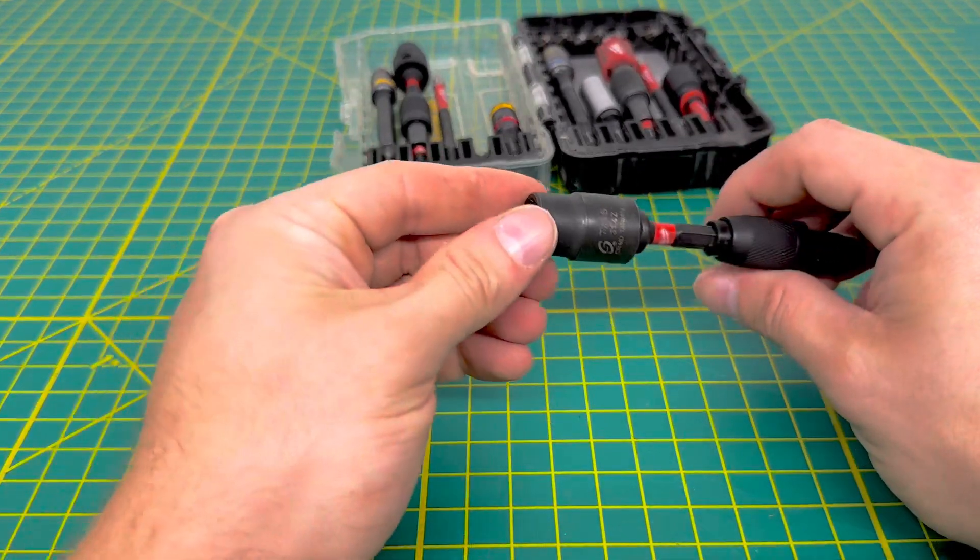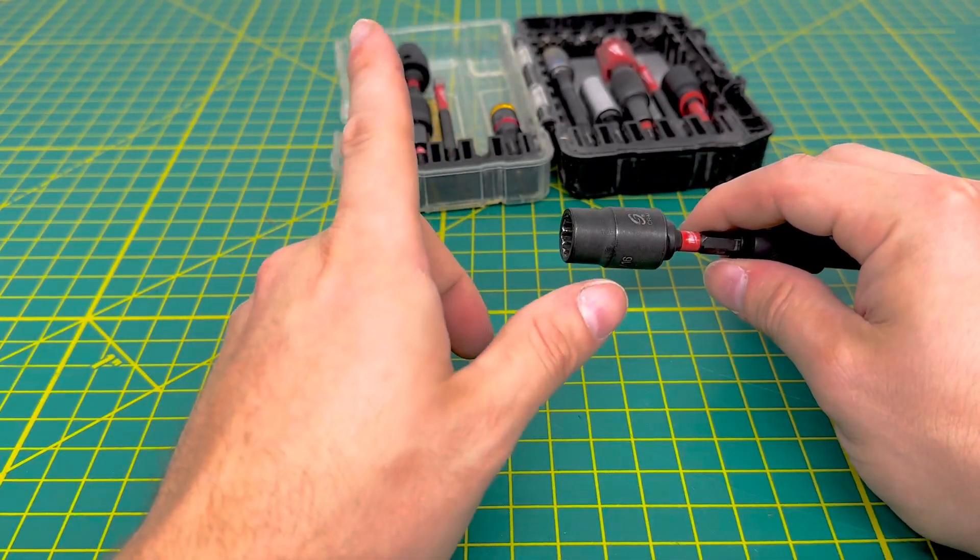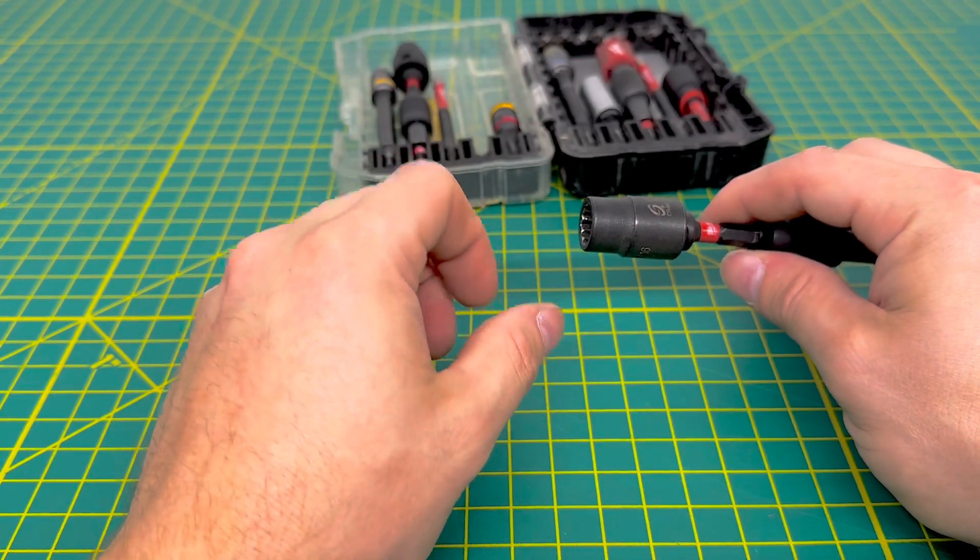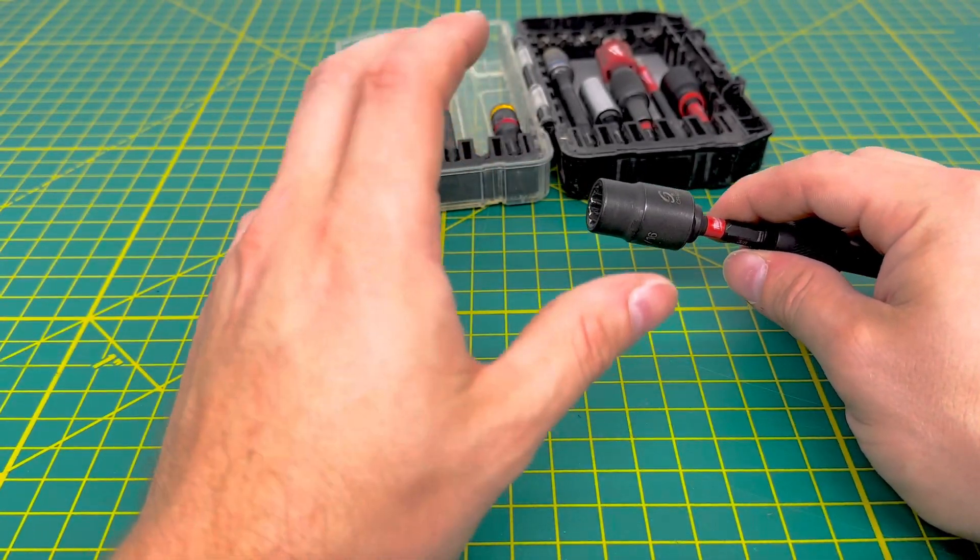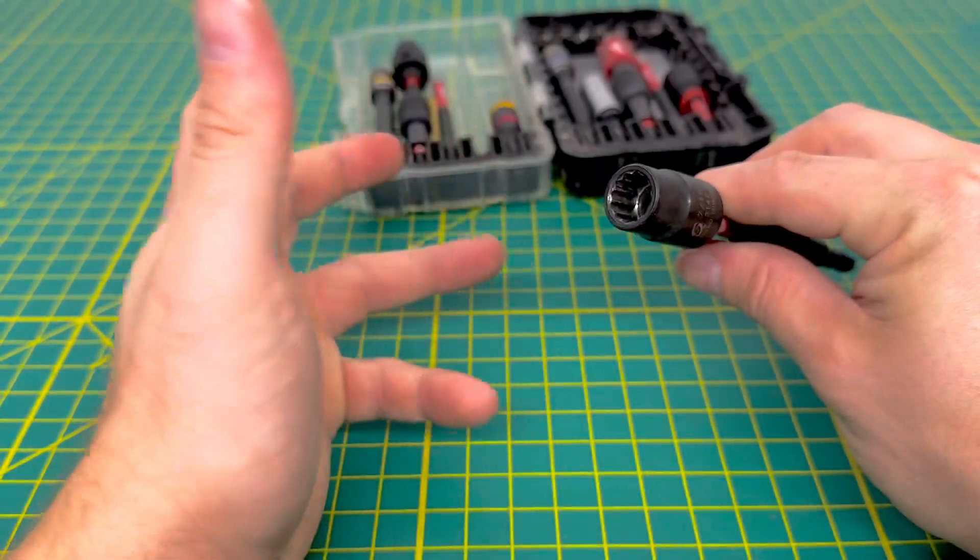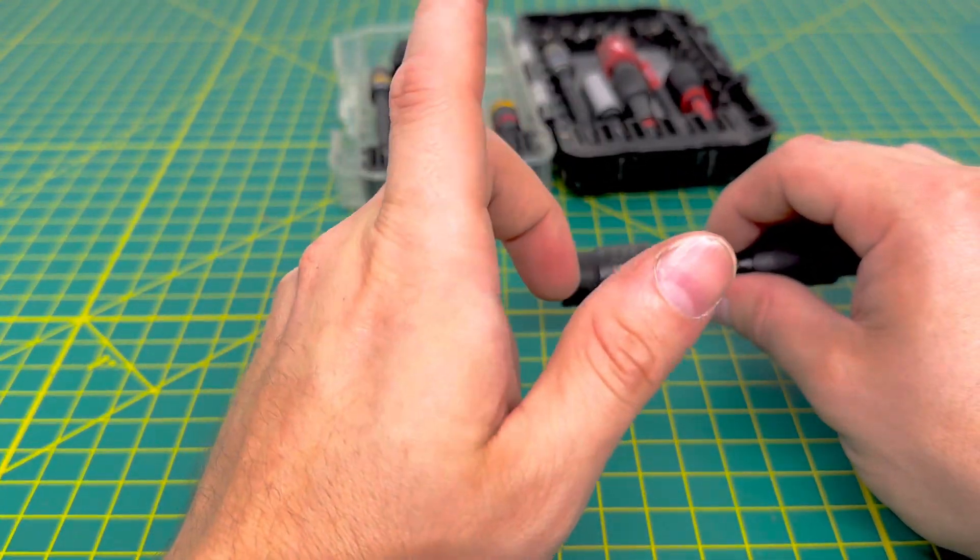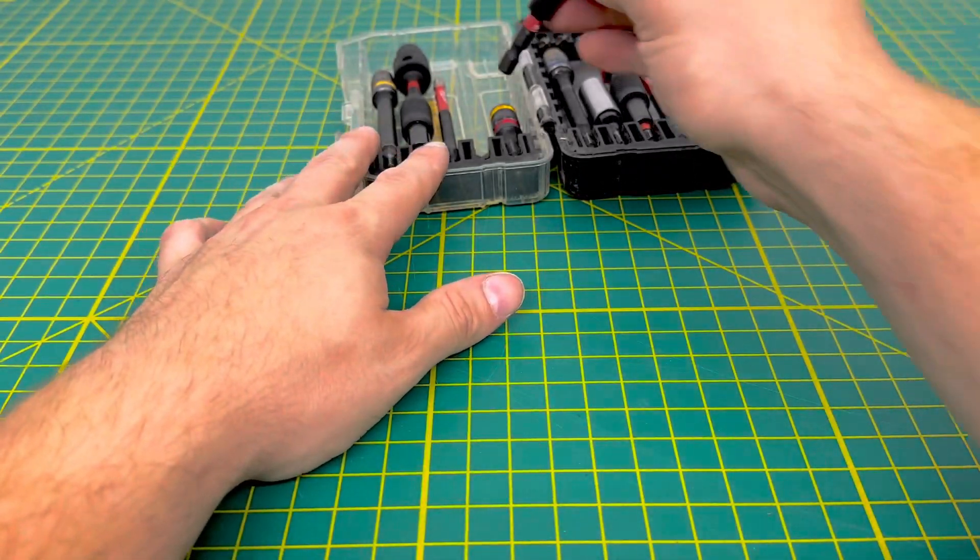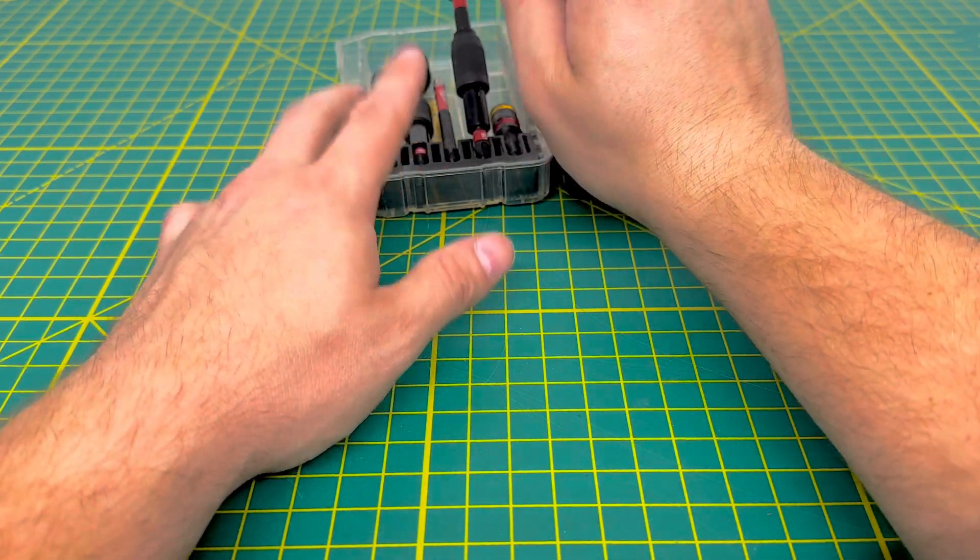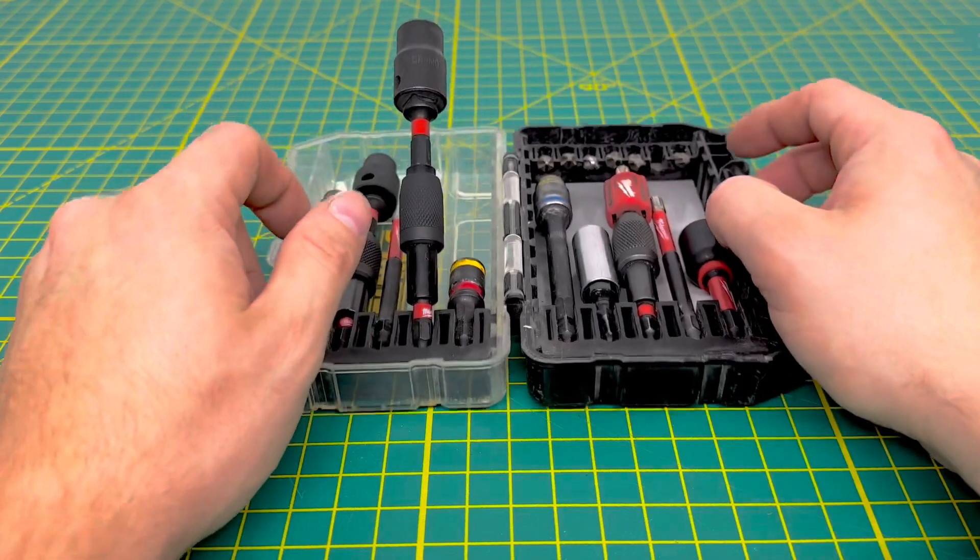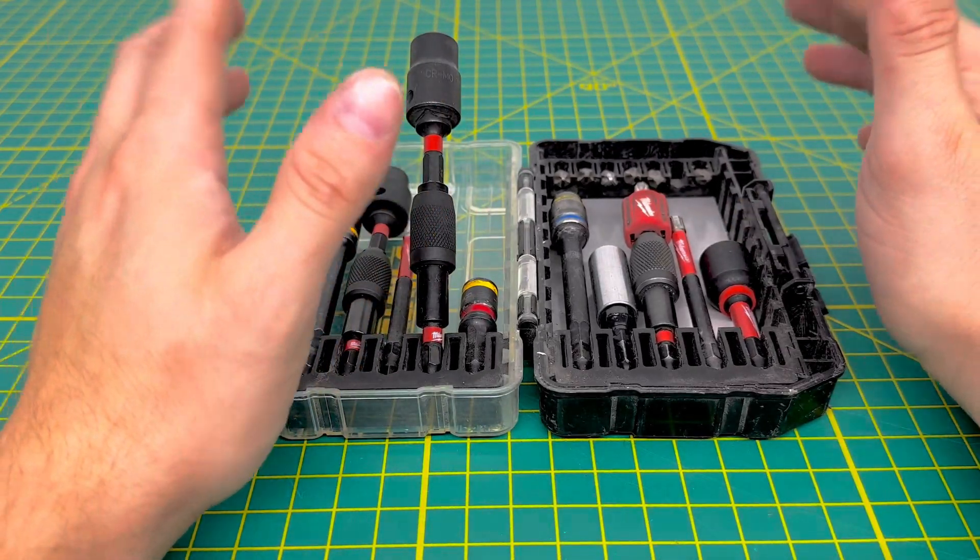And this is another Sonex socket. Now the one thing about these sockets is a normal 6-point socket we've found doesn't really work that well. It's the 12-point, I guess you'd call it spline drive, or 12-point sockets that work the best at gripping those square head screws. So if you are going to use these, just keep that in mind.